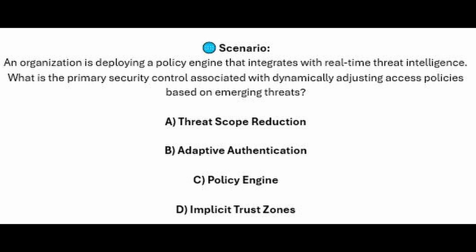Is it A. Threat Scope Reduction? Is it B. Adaptive Authentication? Is it C. Policy Engine? Or is it D. Implicit Trust Zones?